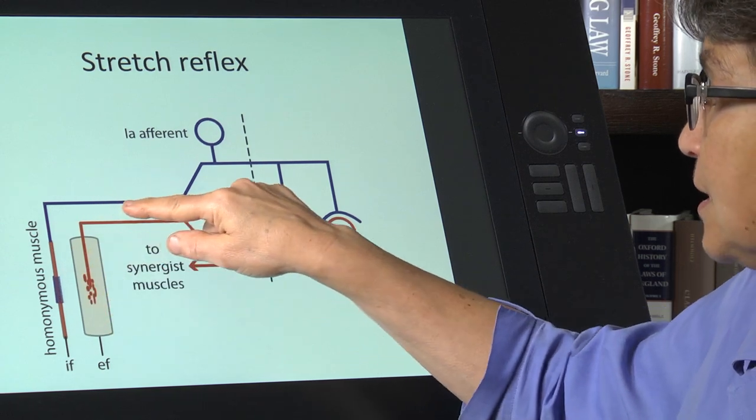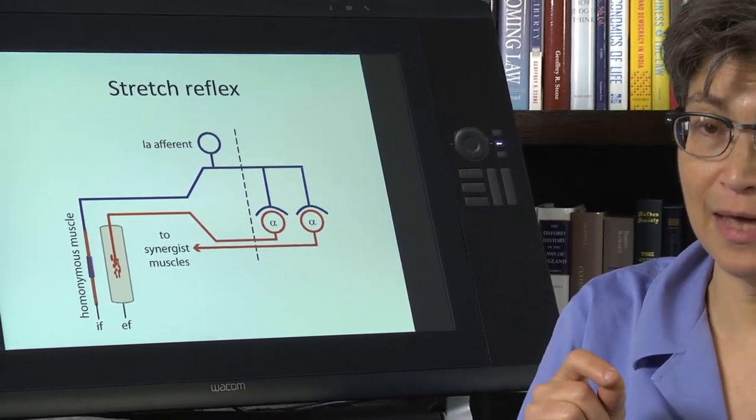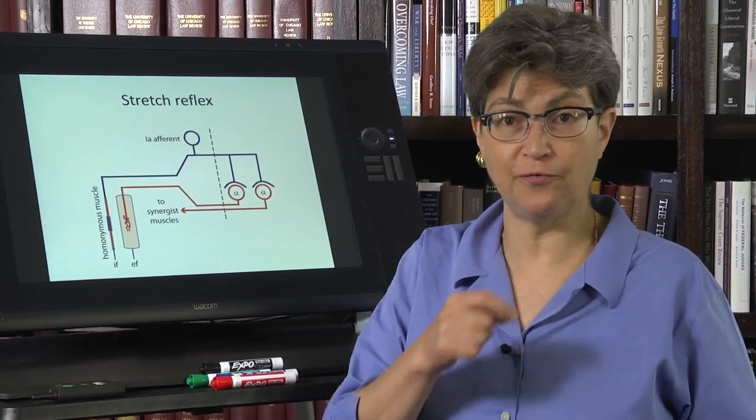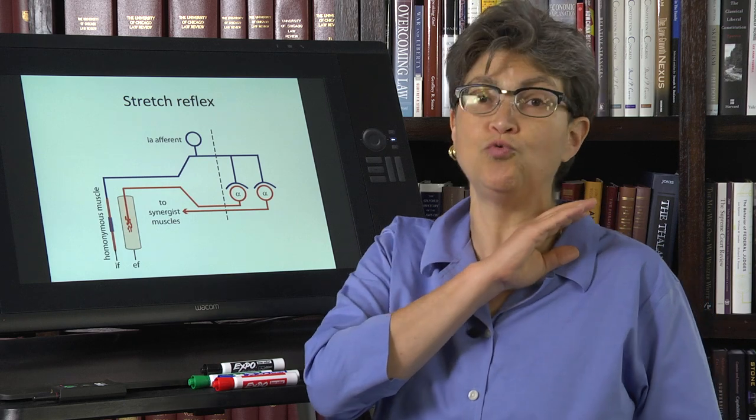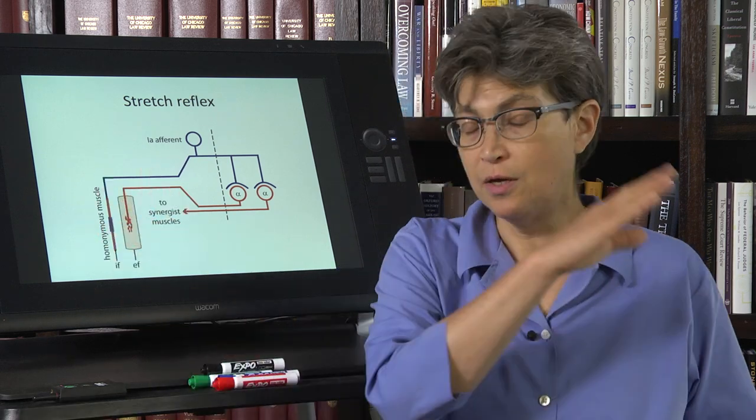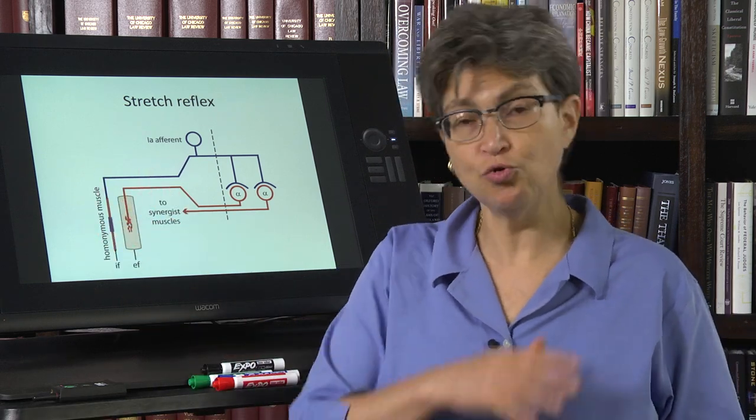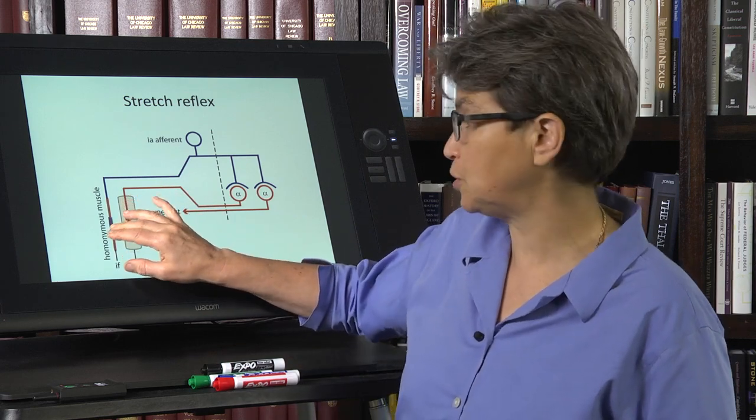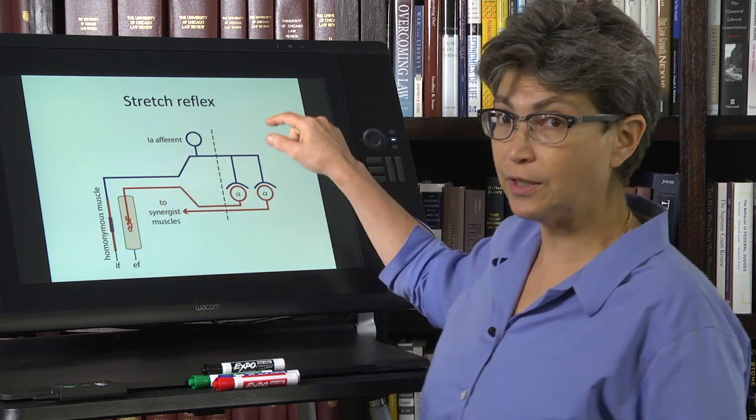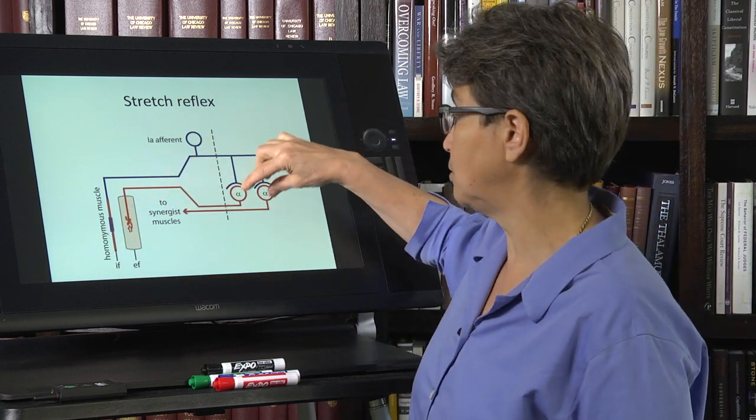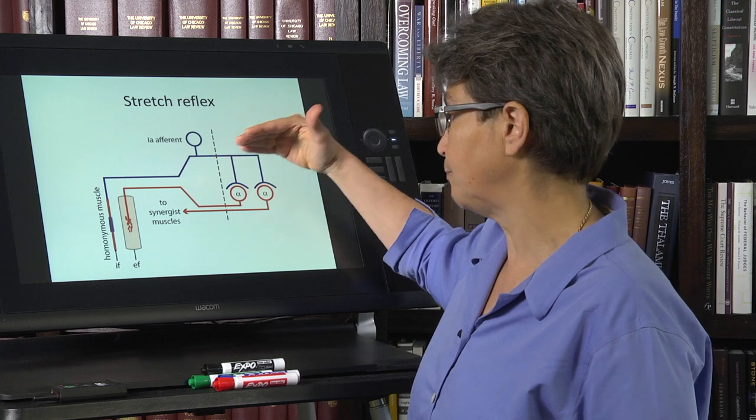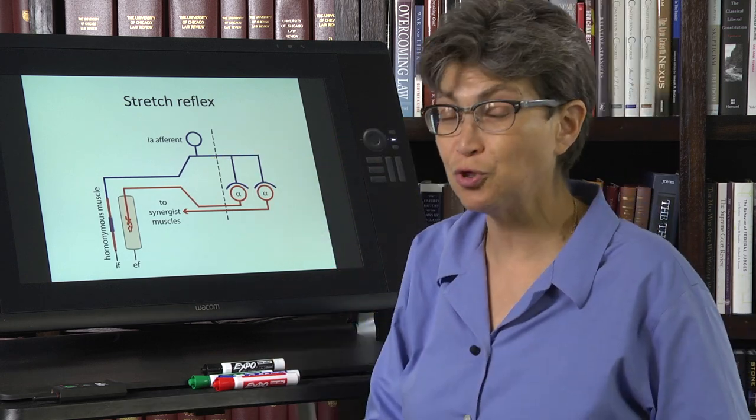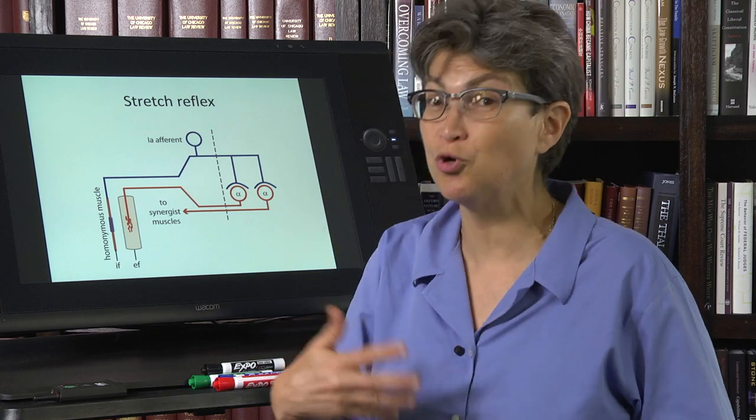This is a highly myelinated axon carrying proprioceptive information, information that you will not ever receive consciously. You have no idea how long this muscle is. You just do not get that information. It goes only to the motor neurons and to motor interneurons.